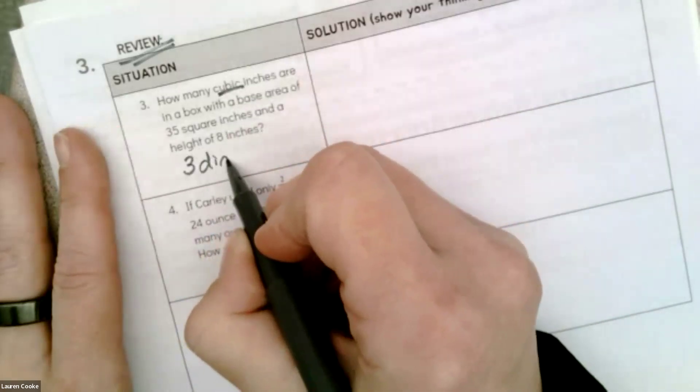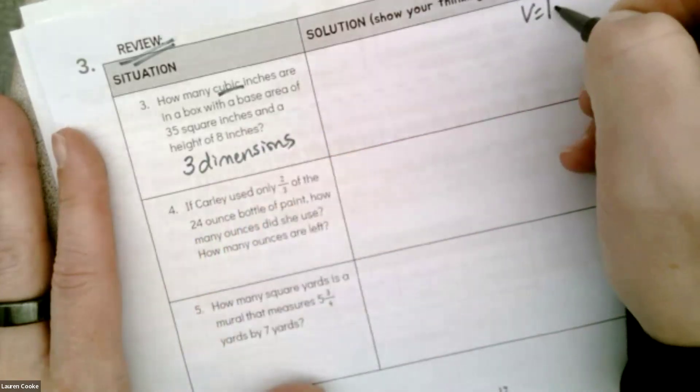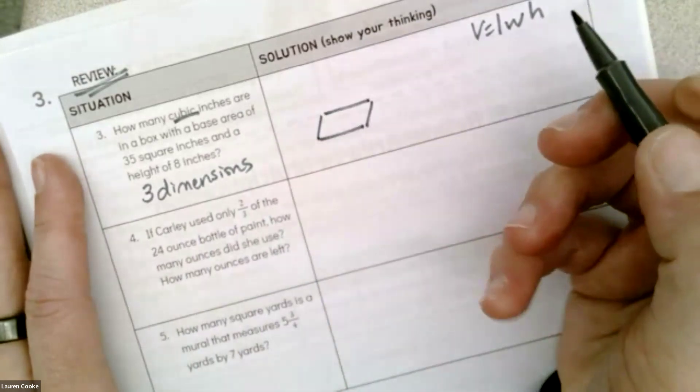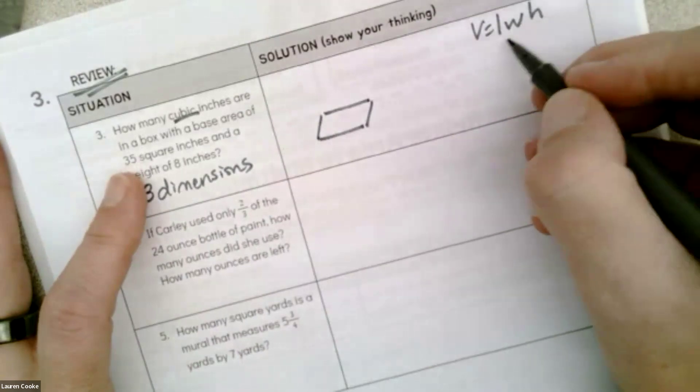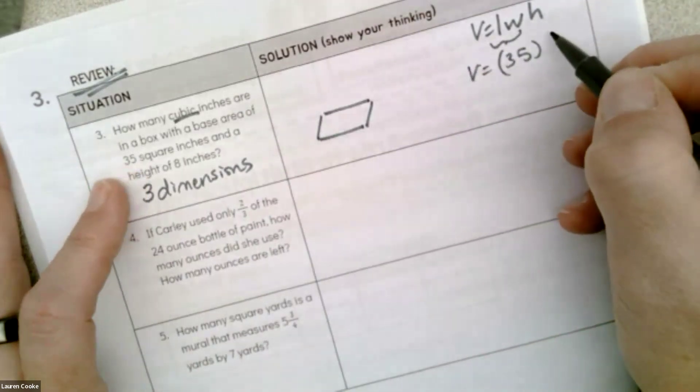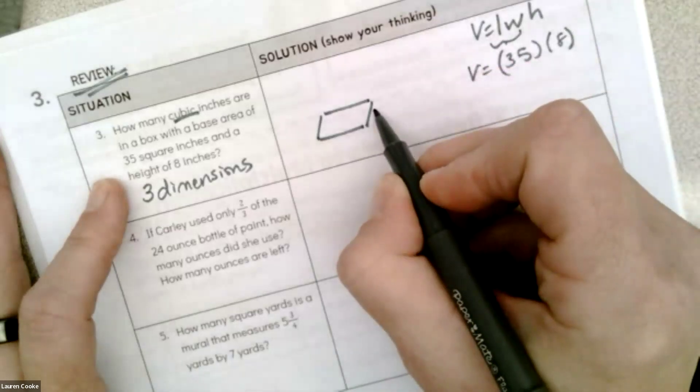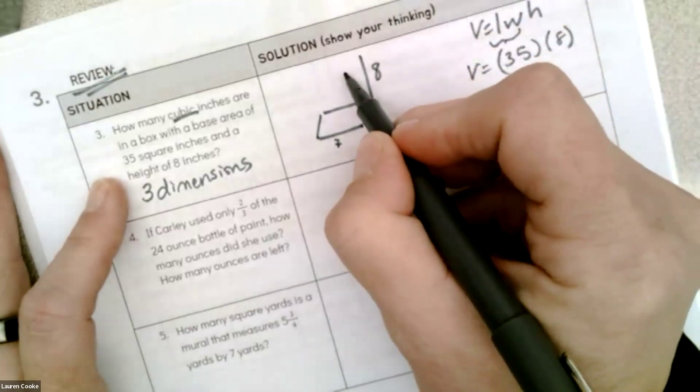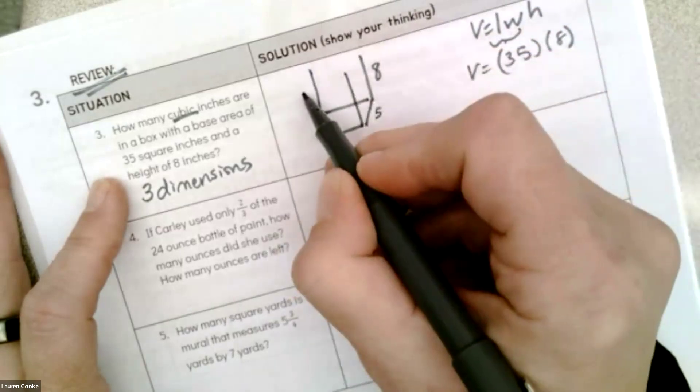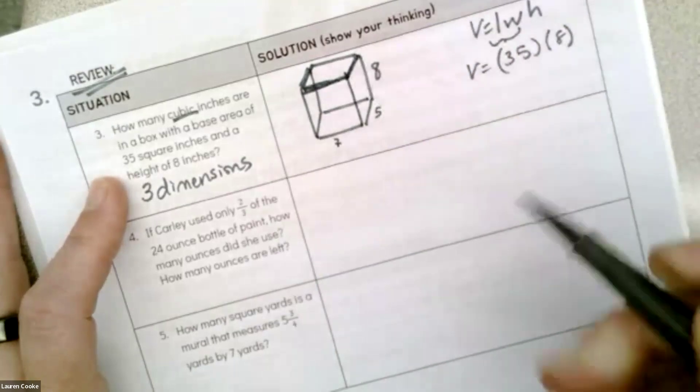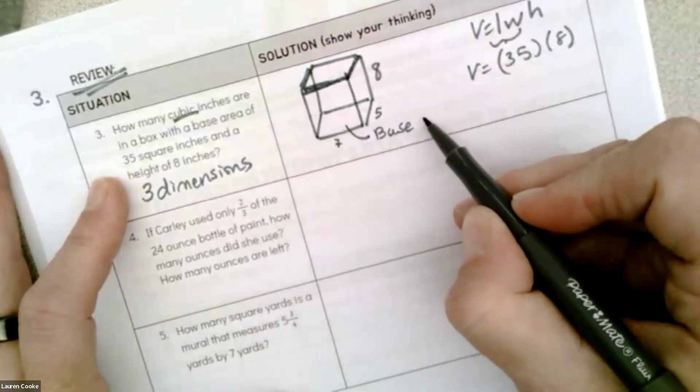How many cubic inches are in a box with a base area of 35 and a height? It's talking about cubic inches, so I know it's 3 dimensions, which means I need a volume: length, width, height. I'm told that the base is already given to us, and the base is 35 square inches. That's length and width, so I know that's 35, whether one of them's 7, the other one's 5, or whether it's 35 and 1. Then I'm told that the height is 8.